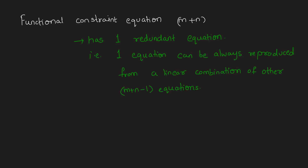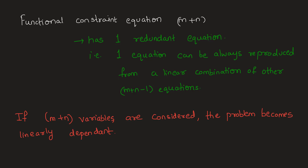So we can conclude that if we consider m + n variables, the problem will become linearly dependent. In order to solve the transportation problem, we need a linearly independent system of equations. Hence, the number of independent constraints, or the number of basic variables in the basic feasible solution, has to be m + n − 1, and not m + n.